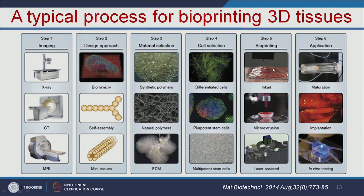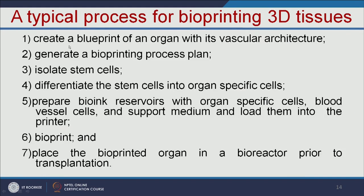The fourth step is selection of cells — differentiated cells or stem cells — which you add on the scaffold to make the particular type of organ. Once you have selected the material and the cell, you bioprint that particular organ using inkjet printing, micro extrusion, or laser-assisted printing. Once the organ is printed, it is placed in a bioreactor and allowed to mature. Once matured in the presence of chemical and mechanical signals, the organ is tested in a bioreactor to check whether it is performing its function properly, and then it can be transplanted to the patient.